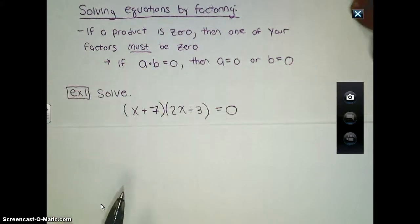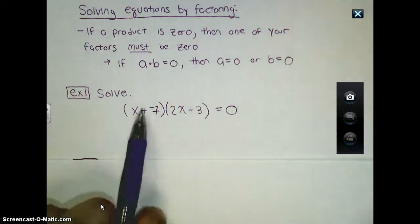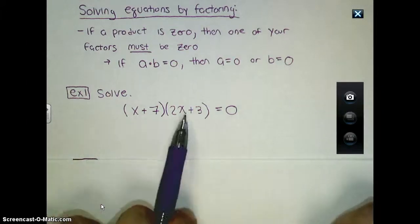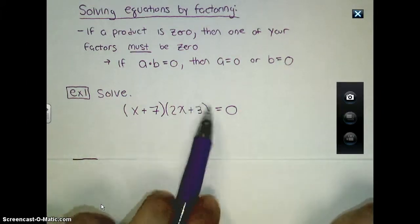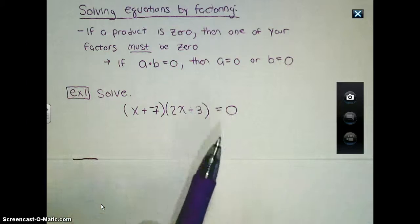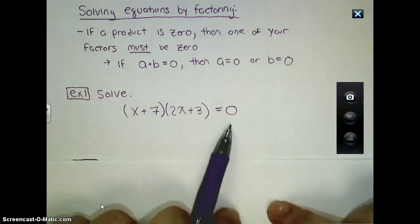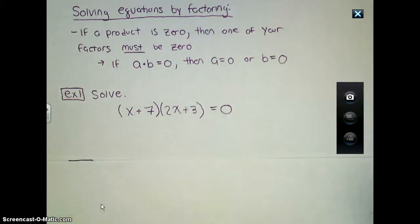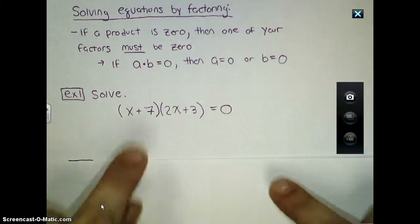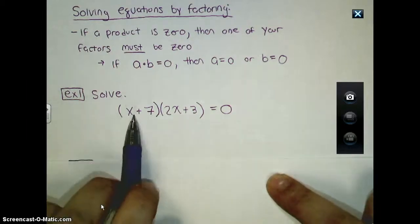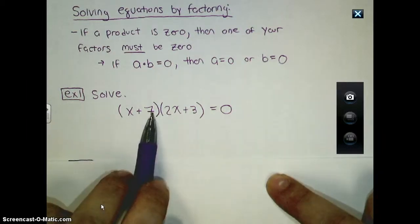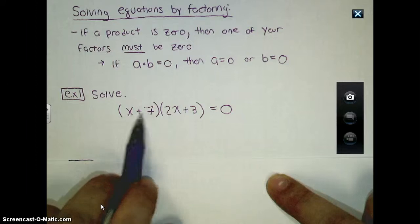So with this fact known, we can look at an example like this. Here's something that's already been factored. I have the factor x plus seven and the factor two x plus three, and I'm setting this equal to zero. The key is to set any type of equation that you want to use factoring as the solving technique, you want to set the equation equal to zero, thus factoring it.